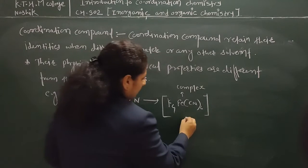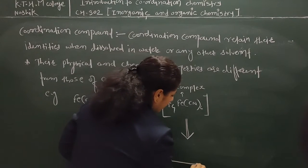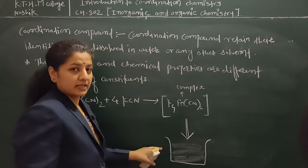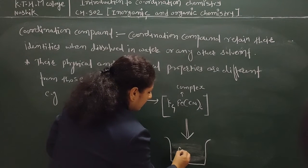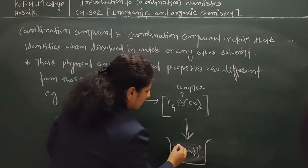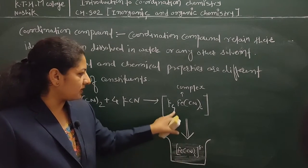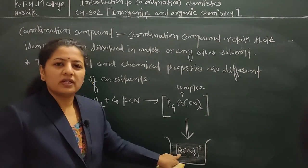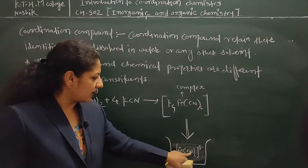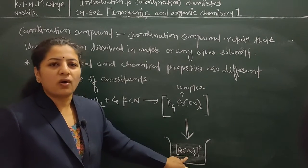If this complex is dissolved in water, what happens? When the complex is dissolved in water, it forms complex ions. There is no dissociation into separate ions like Fe or CN. There is no separation of individual ions, and we cannot test for those ions separately. So in solution, the complex gives only complex ions.